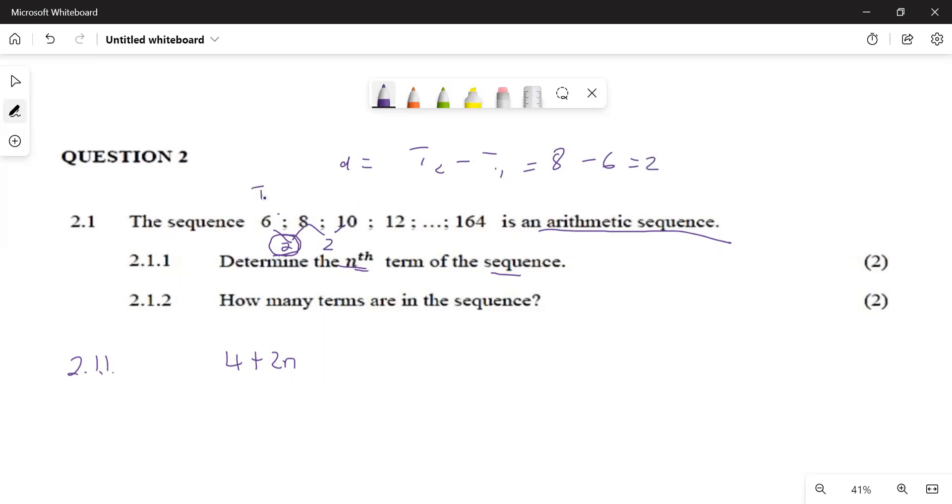We always subtract T1 from T2. We don't have T1 minus T2. We have T2 minus T1, okay? T2 minus T1, and then you get your D.